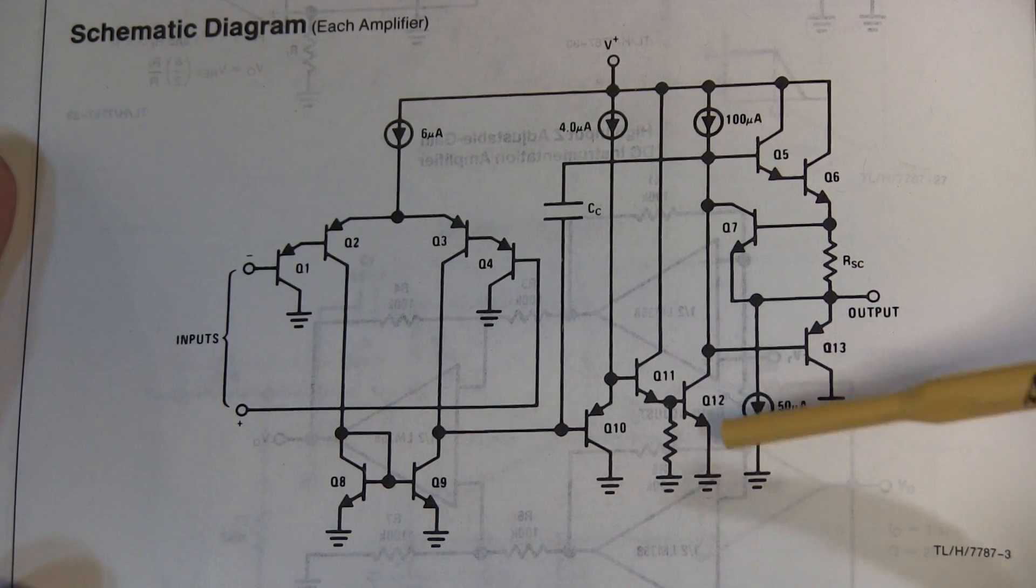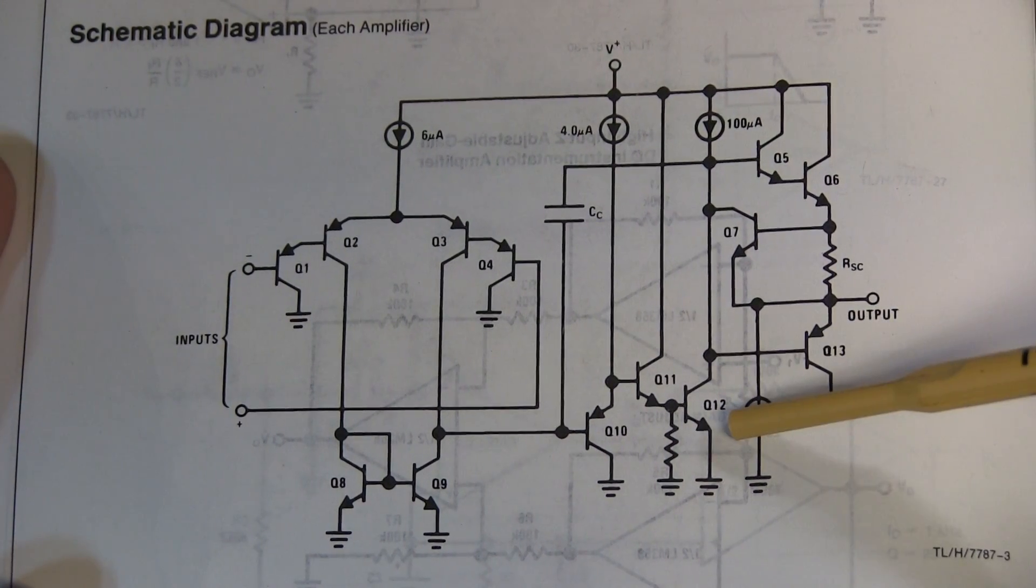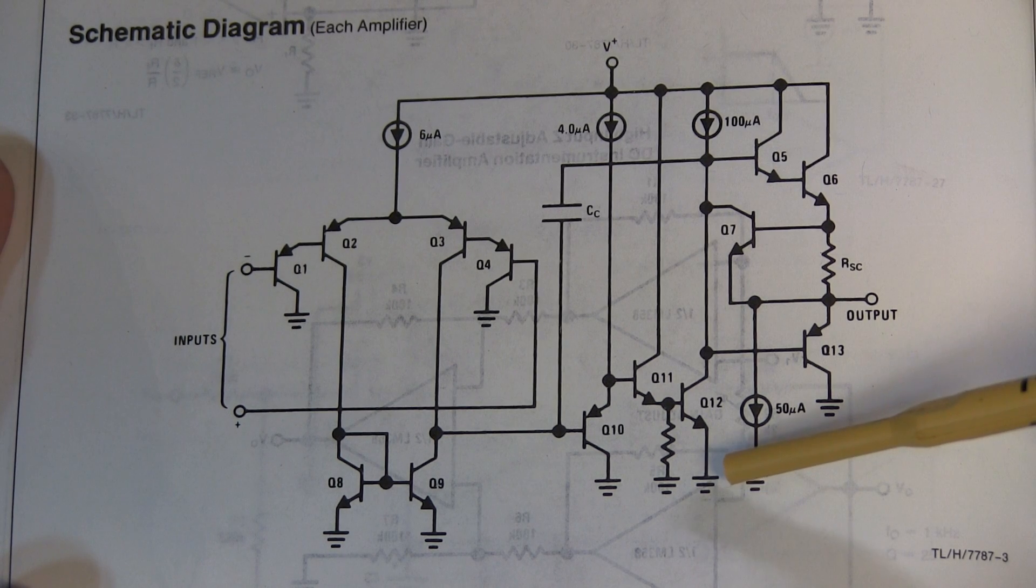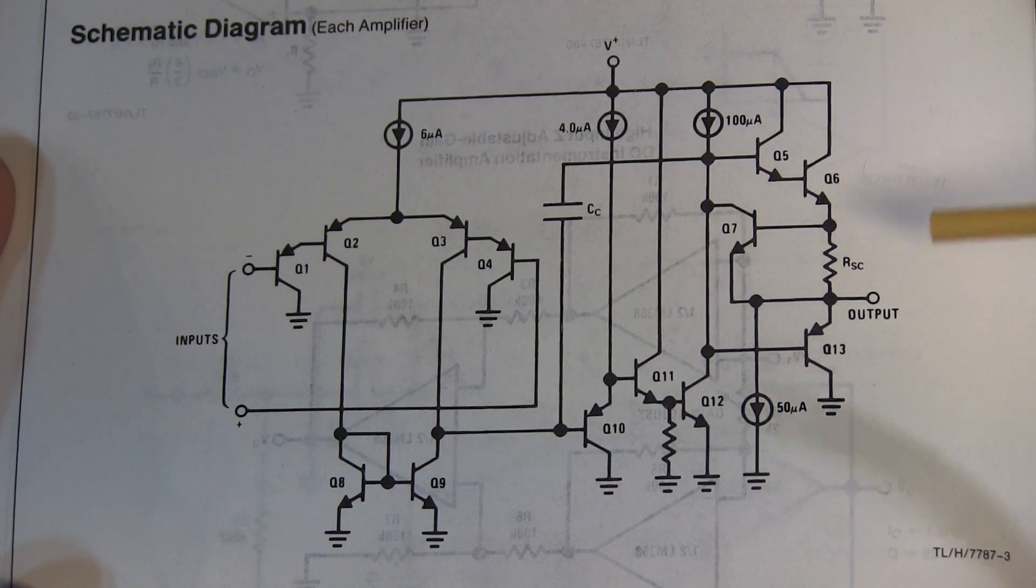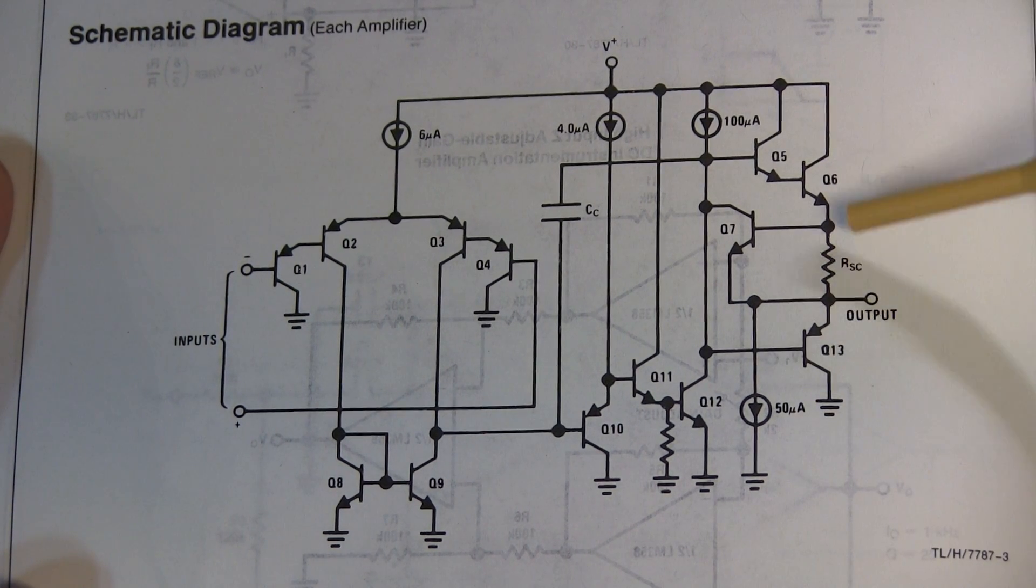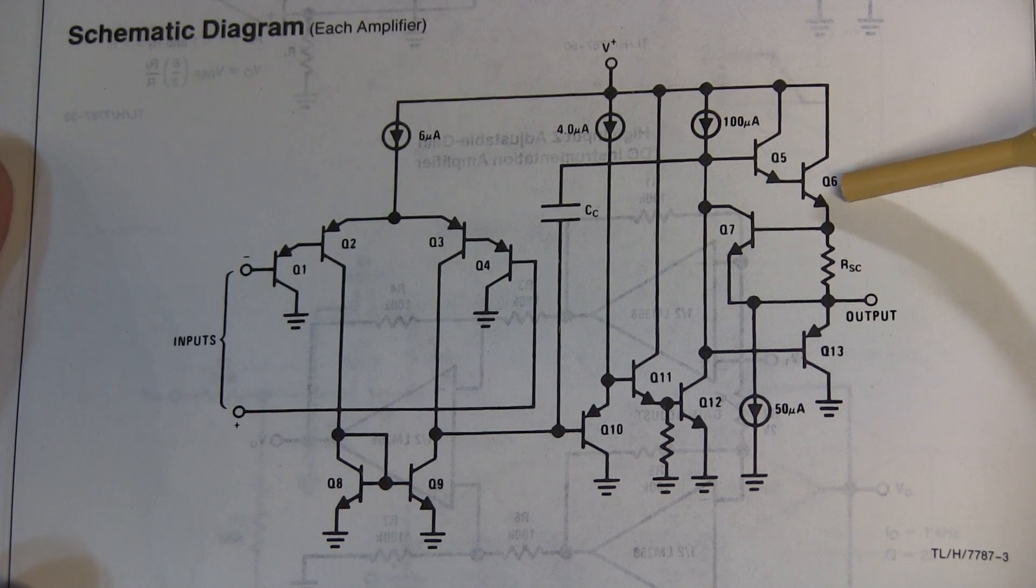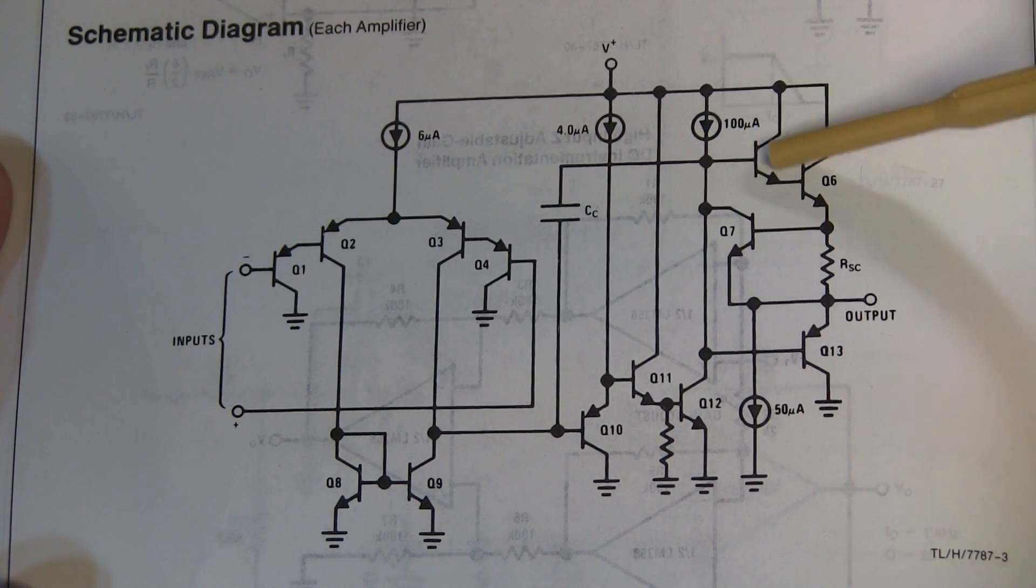So we essentially have two stages of voltage gain, the differential amp and Q12. Now this Q12 common emitter stage drives the output transistors, which are essentially Q13 and Q6. Q6 is driven by another emitter follower, Q5.